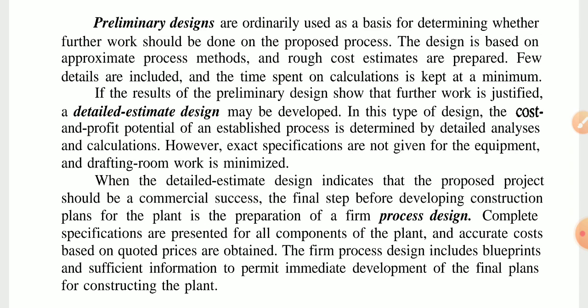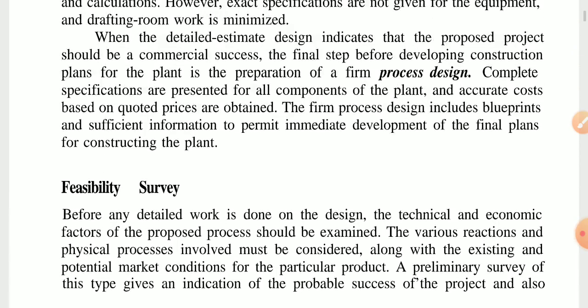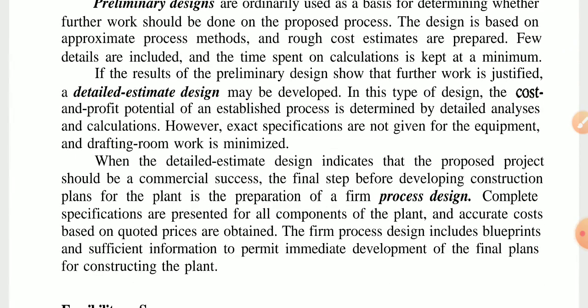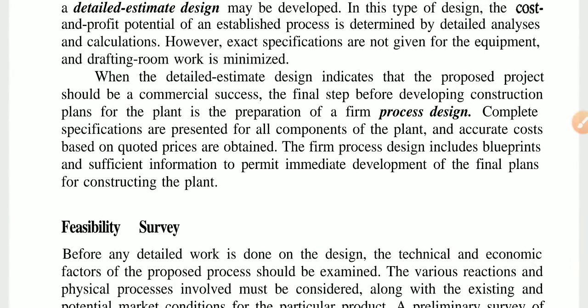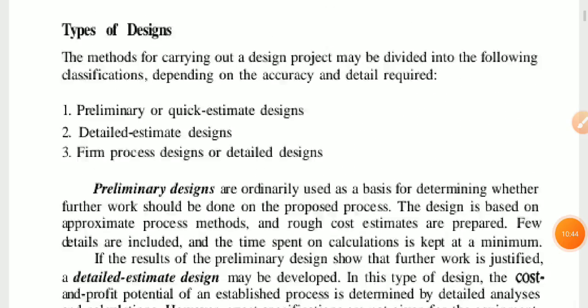When the detail estimate design indicates that the proposed project should be a commercial success, the final step before developing construction plans for the plant is the preparation of the film process design. Complete specifications are presented for all components of the plant, and accurate costs based on quoted prices are obtained. The film process design includes blueprints and sufficient information to permit immediate development of the final plans for construction of the plant.